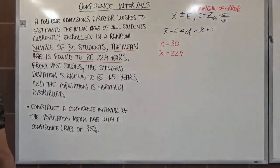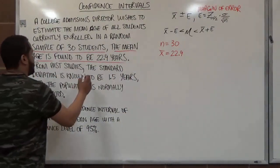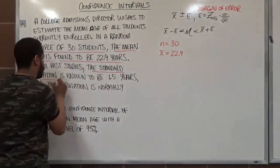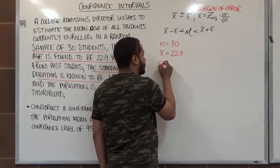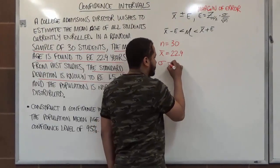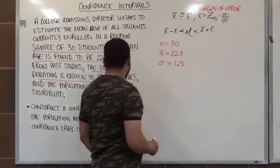The last thing we need to know to do this is the standard deviation. The standard deviation is known to be 1.5 years. And since it's known, that means we're using sigma, and that's 1.5.